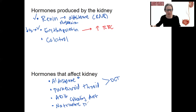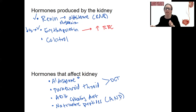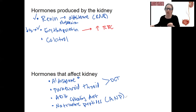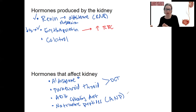Natriuretic peptides — we've already learned about atrial natriuretic peptide, a peptide produced in the atria of the heart in response to high blood pressure. It acts on the kidney to increase GFR so we can have more urine output in response to that high blood pressure. That makes sense — we want to have that.